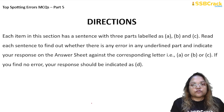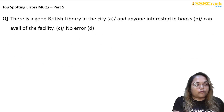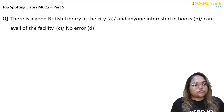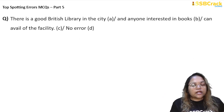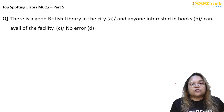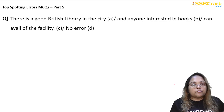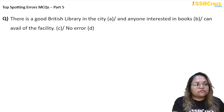Let's start solving the questions one by one. First question: 'There is a good British library in the city and anyone interested in books can avail of the facility.' At first look, you might think the sentence is absolutely correct and grammatically right, so the answer is D. But the answer is not D — in fact, the answer is C.